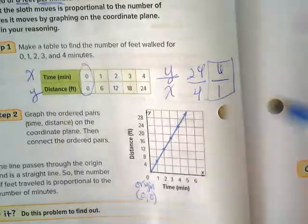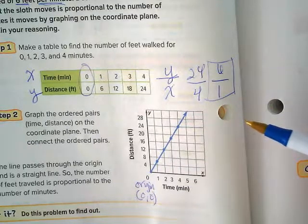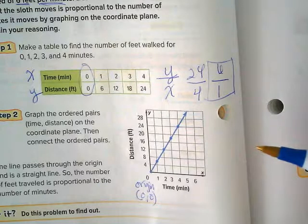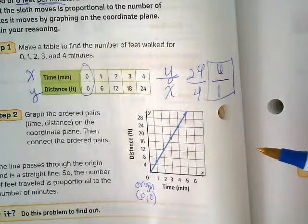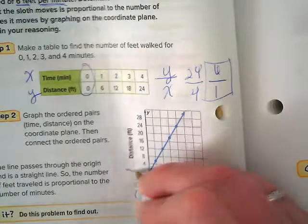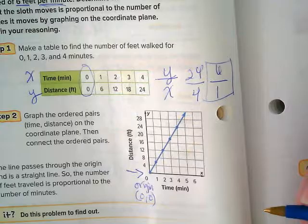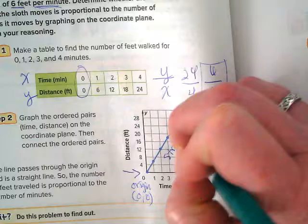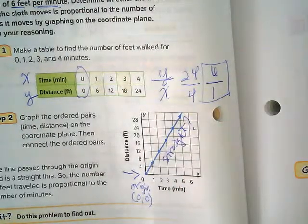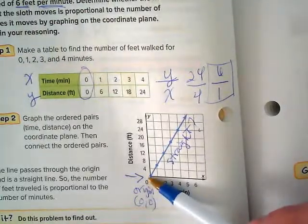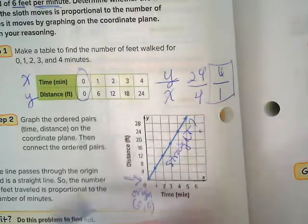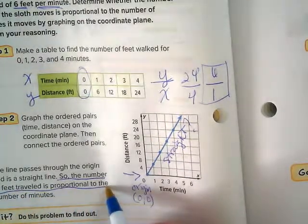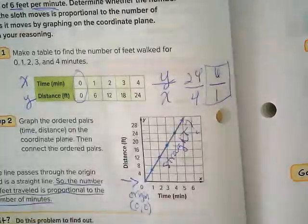Now we're going to tell it with a graph and it's even easier. If you can take the time to graph it and you're a visual person like me, there's two things you have to look for. One, does it go through the origin? Two, is it a straight line? And this one does go through the origin and it is a straight line. So, right here, underline this sentence. The number of feet traveled by the sloth is proportional to the number of minutes.